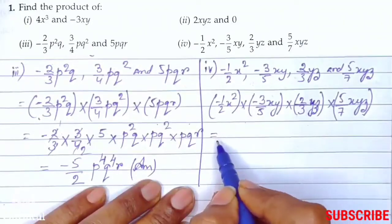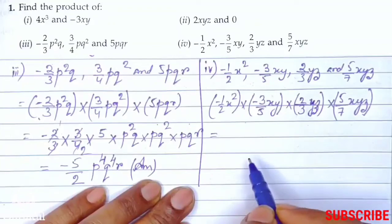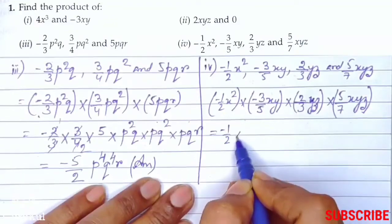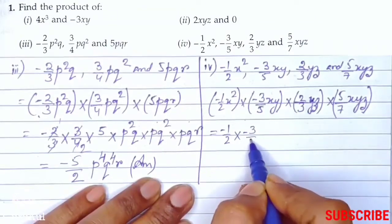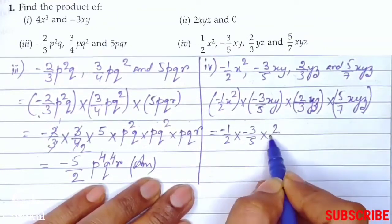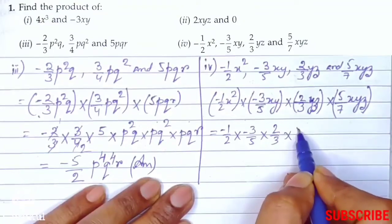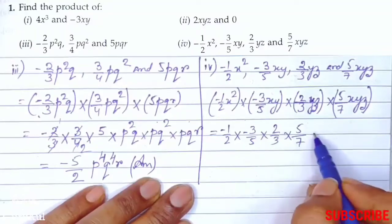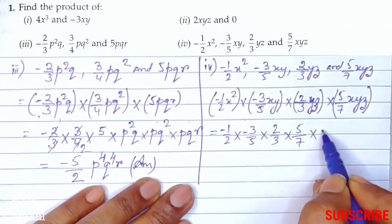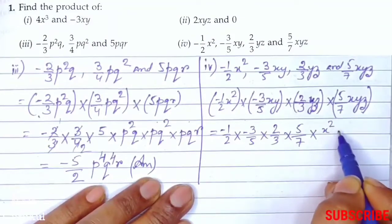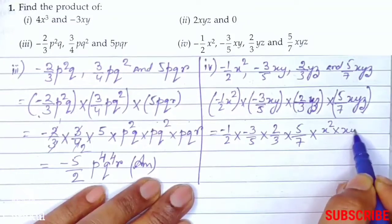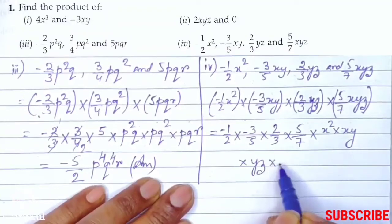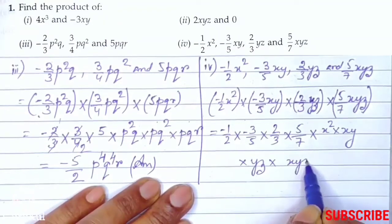Now next step: all constants on one side. That is minus 1 by 2 into minus 3 by 5 into 2 by 3 into 5 by 7. Now what remains: literals, so into x square, into xy, into yz, into xyz.